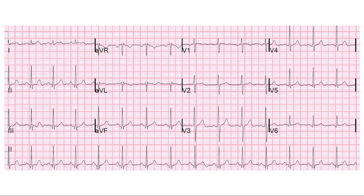The next thing is the PR interval. The PR interval is measured from the beginning of the P wave until the Q wave or R wave. Here you can see the PR interval. Normally the PR interval is less than 5 small squares or 1 large square, that is 200 milliseconds. A PR interval more than 5 small squares or 200 milliseconds means there is an abnormality at the AV node or below.